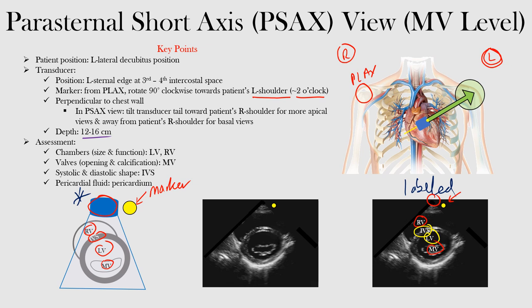To review: in the parasternal short axis view at the mitral valve level, the patient is in the left lateral decubitus position with the transducer at the left sternal edge, third or fourth intercostal space. From the parasternal long axis view, rotate the transducer 90 degrees clockwise towards the patient's left shoulder, keeping it perpendicular to the chest wall. To look at the aortic valve level, tilt away from the right shoulder; for the papillary muscle level — covered in the next lecture — tilt towards the right shoulder. Depth is typically 12 to 16 centimeters.